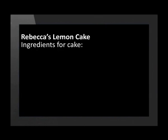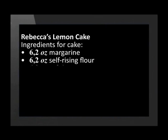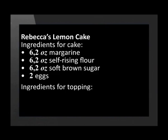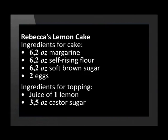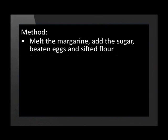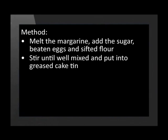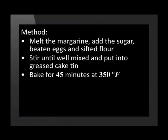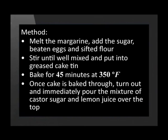More difficult questions may involve doing some conversions of a temperature in a recipe. Let's try one together. This recipe for Rebecca's lemon cake needs 6.2 ounces of margarine, 6.2 ounces of self-raising flour, 6.2 ounces of soft brown sugar, and 2 eggs. The topping needs juice of 1 lemon and 3.5 ounces of caster sugar. The method: melt the margarine, add the sugar, beaten eggs and sifted flour, stir until well mixed and put into a greased cake tin. Bake for 45 minutes at 350 degrees Fahrenheit. Once the cake is baked through, turn out and immediately pour the mixture of caster sugar and lemon juice over the top.